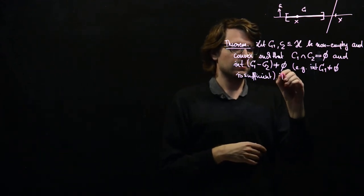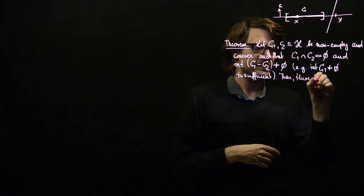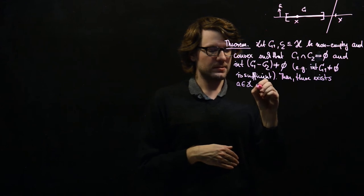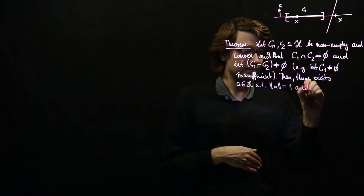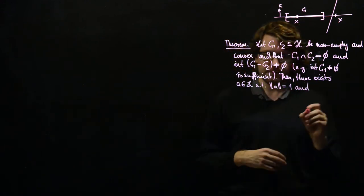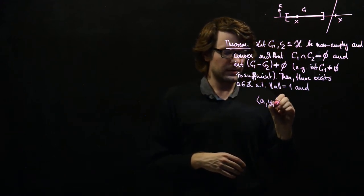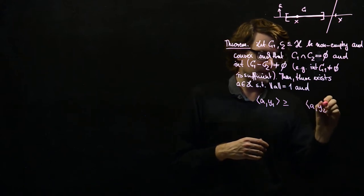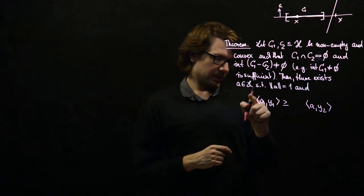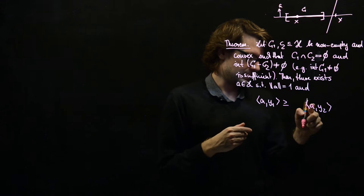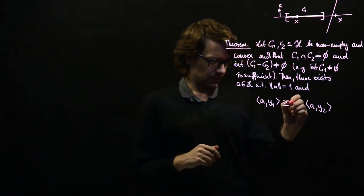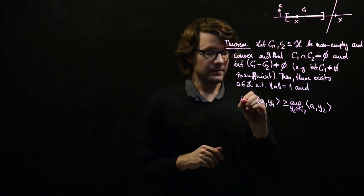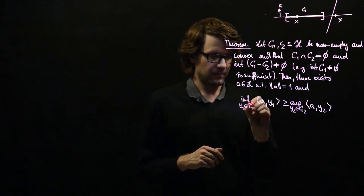Given these assumptions, there exists A in H such that the norm of A equals 1 and the following separation property holds: the inner product of A with Y1 is greater or equal to the inner product of A with Y2 for all Y1 in C1 and Y2 in C2. Equivalently, the supremum over Y2 in C2 of the inner product A·Y2 is less or equal to the infimum over Y1 in C1 of A·Y1.